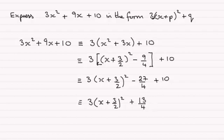And you can see, I've now got it in this format. If we were asked to quote p and q, not that we are, but if you were, p would be 3 over 2, and q would be 13 over 4. All right?